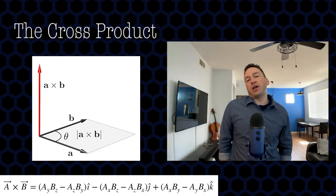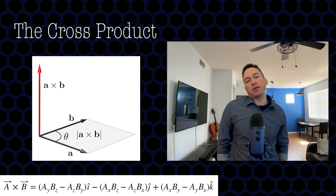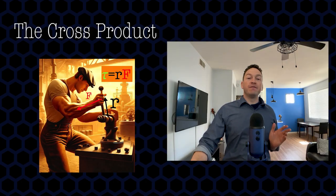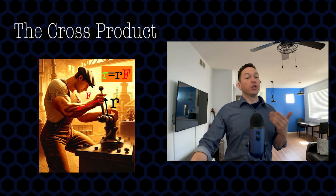Let's understand the cross product. The cross product is a way of multiplying vectors in a way that produces a third vector. It's calculated using a formula — but let's find out what it actually means. The cross product was invented to describe torque and other things which are similar.